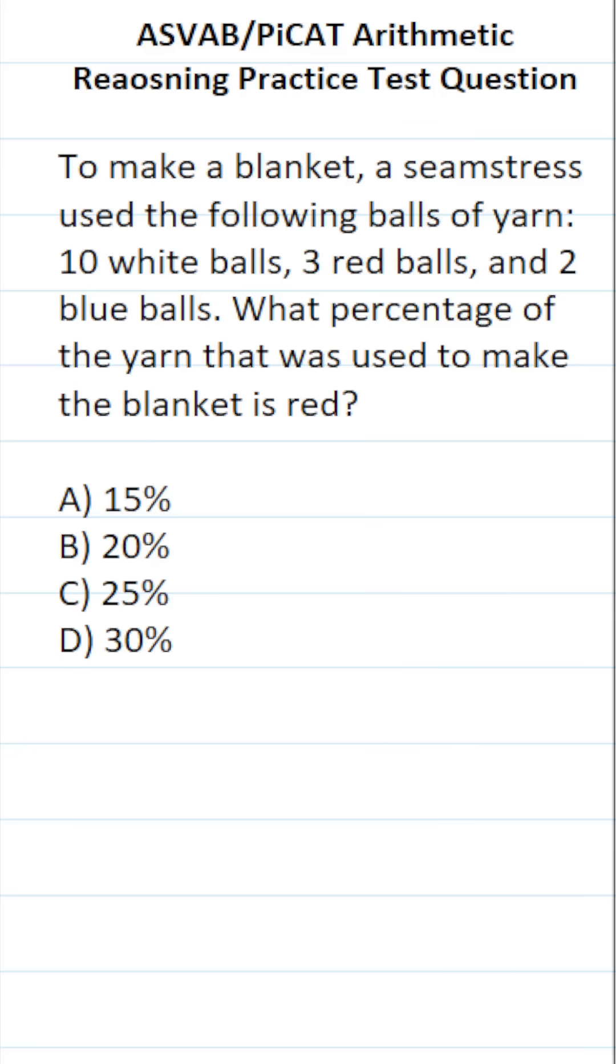So again, 3 red balls were used out of a total of 10 white balls, 3 red, and 2 blue. So that's 3 out of 10 plus 3 is 13, plus 2 is 15. So 3 out of the 15 balls of yarn used were red.